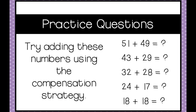Here are some practice questions. Try adding these numbers using the compensation strategy. You may want to begin with base 10 blocks — that's a really good place to start, just to get your brain understanding that what you take out of one side, you just add to the other side.